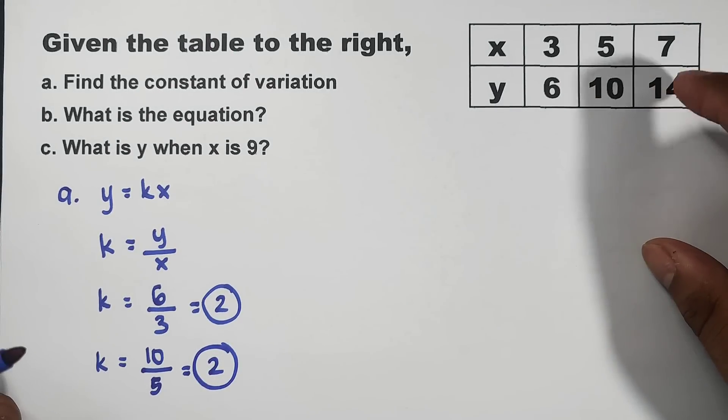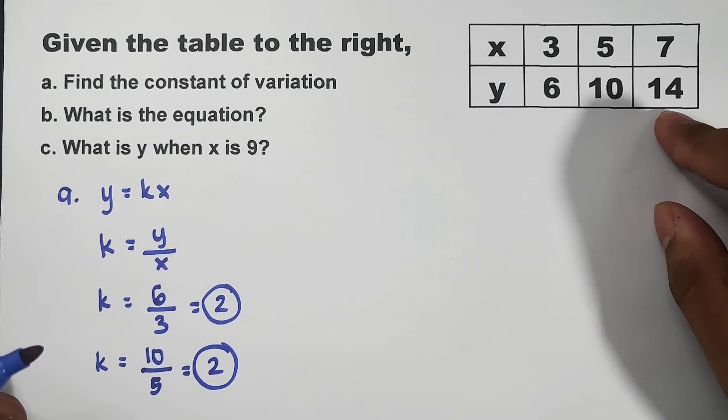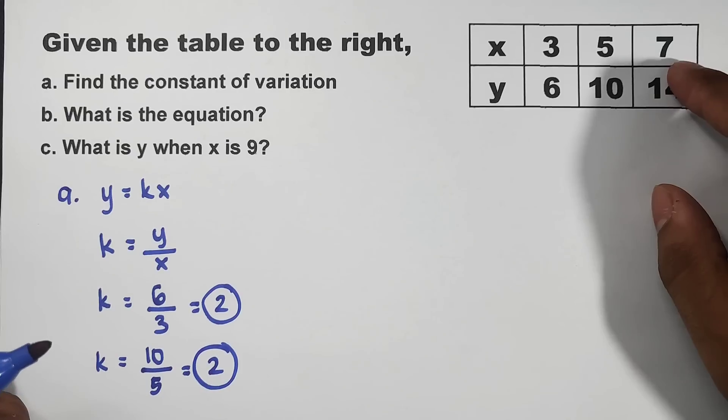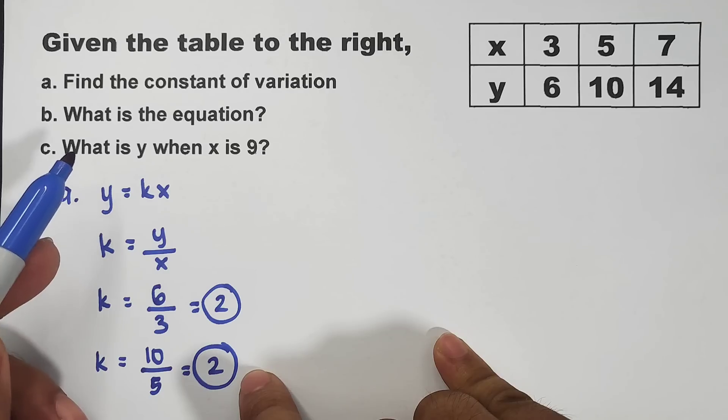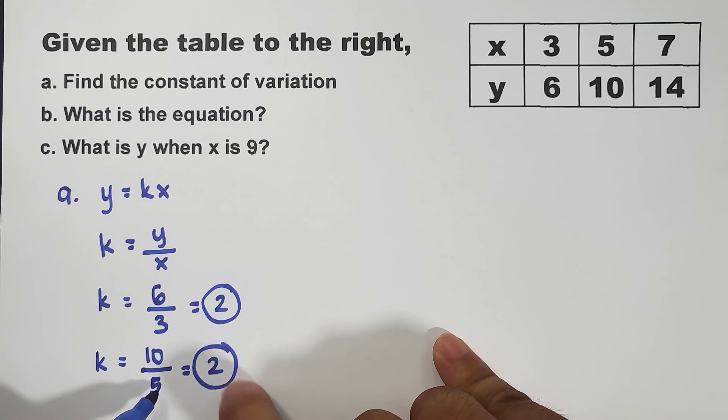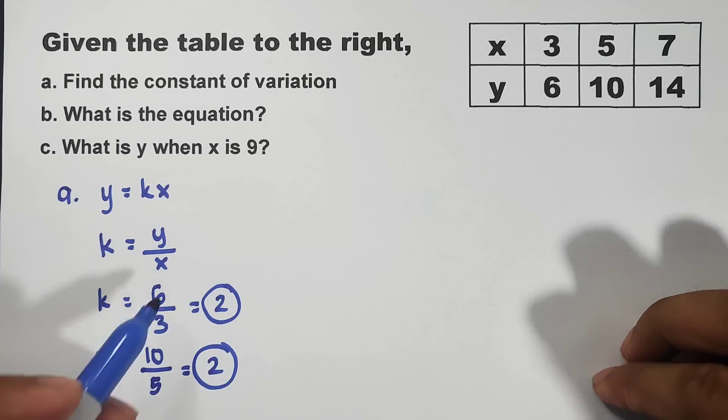So, when we get the constant here, if we divide 14, y is 14 divided by 7, it will also give you 2. Meaning, the constant of variation is simply 2. So, let's move on with letter B.